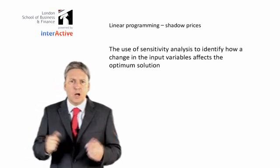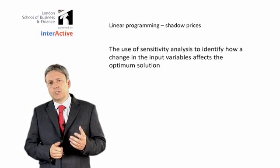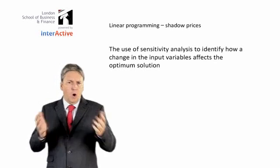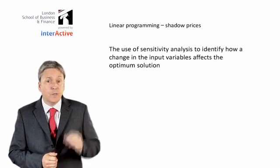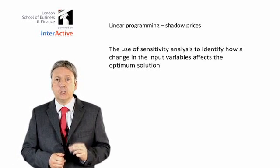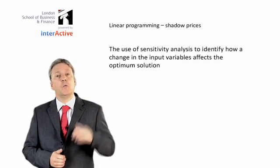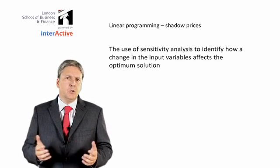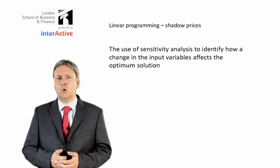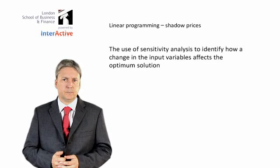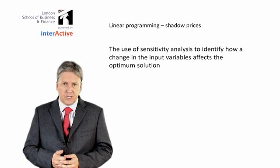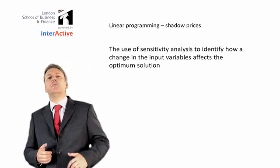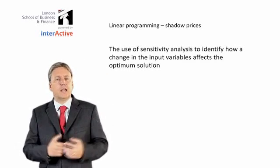In the example that we've been working on, that is the hours in departments A, B, and C. What we want to know is how the optimum solution would change if, say, there were more or less hours in department A. To do this, we calculate something called a shadow price. The shadow price is simply the additional contribution that would be generated if we had one more unit, or in this case, one hour.